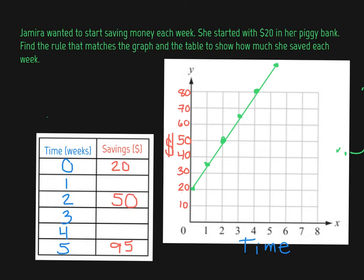Here's our first one. Jamira wanted to start saving money each week. She started with $20 in her piggy bank. Find the rule that matches the graph and the table to show how much she saved each week.